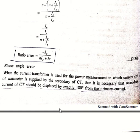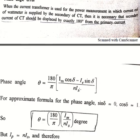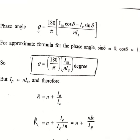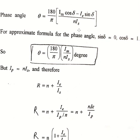For phase angle error: when the CT is used for power measurement, where the current coil of the wattmeter is supplied by the secondary of CT, it is necessary that the secondary current be displaced exactly 180 degrees from the primary. But in practice it is slightly less than 180 degrees. We derived that theta equals (180/pi) multiplied by (I_M*cos(delta) minus I_E*sin(delta)) divided by N*I_s. For the approximate formula, putting sin(delta) equals 0 and cos(delta) equals 1, we get theta equals (180/pi) multiplied by I_M divided by N*I_s, in degrees. This is our phase angle error.